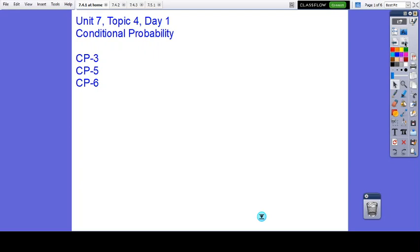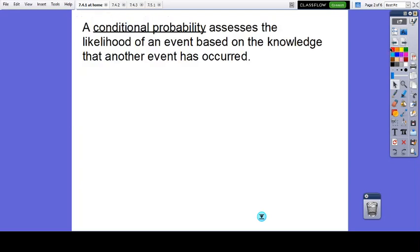So we will start right away into this with a definition. At the top of your page, you can put down conditional probability, and you can write the definition. It assesses the likelihood of an event based on the knowledge that another event has occurred. Feel free to stop the video here. We're going to go through an example and talk about this again.